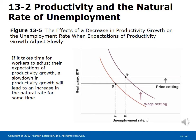Figure 13-5 shows the effects of a decrease in productivity growth on the unemployment rate when expectations of productivity growth adjust slowly. If it takes time for workers to adjust their expectations of productivity growth, a slowdown in productivity growth will lead to an increase in the natural rate for some time. Suppose productivity growth slows down — A increases more slowly than before. If expectations adjust slowly, A_E will increase more than A does, causing the wage-setting relation to shift up more than the price-setting relation. Equilibrium moves from B to B', and the natural rate rises. As workers eventually adjust their expectations, unemployment falls back to its original level. There is no support in theory or in the data for the idea that faster productivity growth leads to higher unemployment.